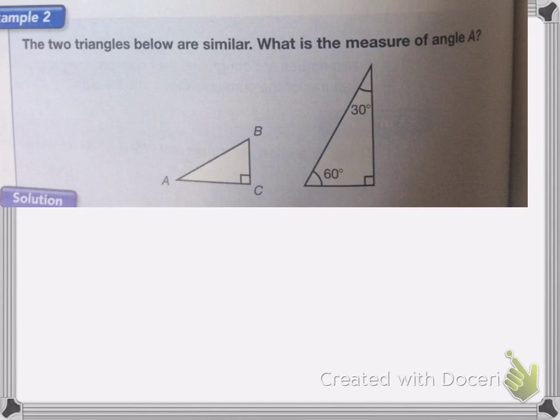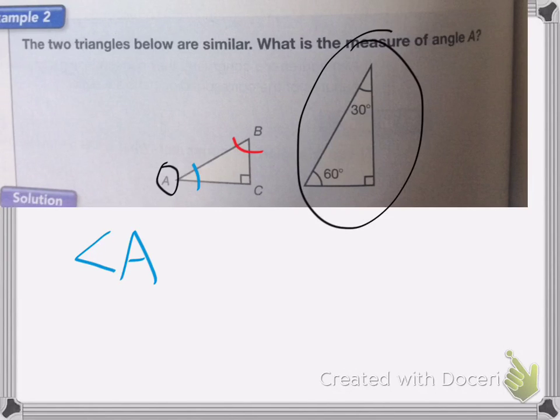Here it says the two triangles below are similar. That means that they are the same shape, but they're not necessarily the same size. But if they're the same shape, that means that the angles are going to be the same on both triangles. So here I have angle A and I have angle B. It wants to know what is the measure of angle A. So I need to figure out which one of these angles on this triangle is the same size angle as angle A.